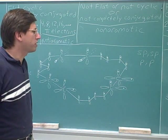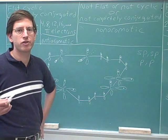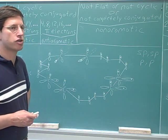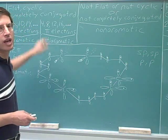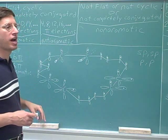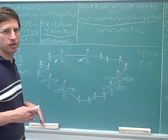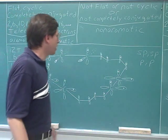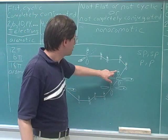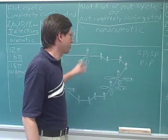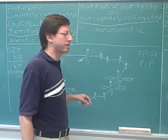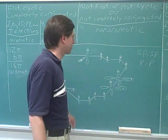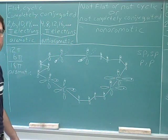So what it comes down to is that any time you have a triple bond in a ring, one of the pi bonds will contribute electrons for Huckel's rule, and one of the pi bonds will not. Because in any triple bond, you can only have one set of p orbitals overlapping with the other p orbitals in the ring — the other set of p orbitals has to be perpendicular to the rest.